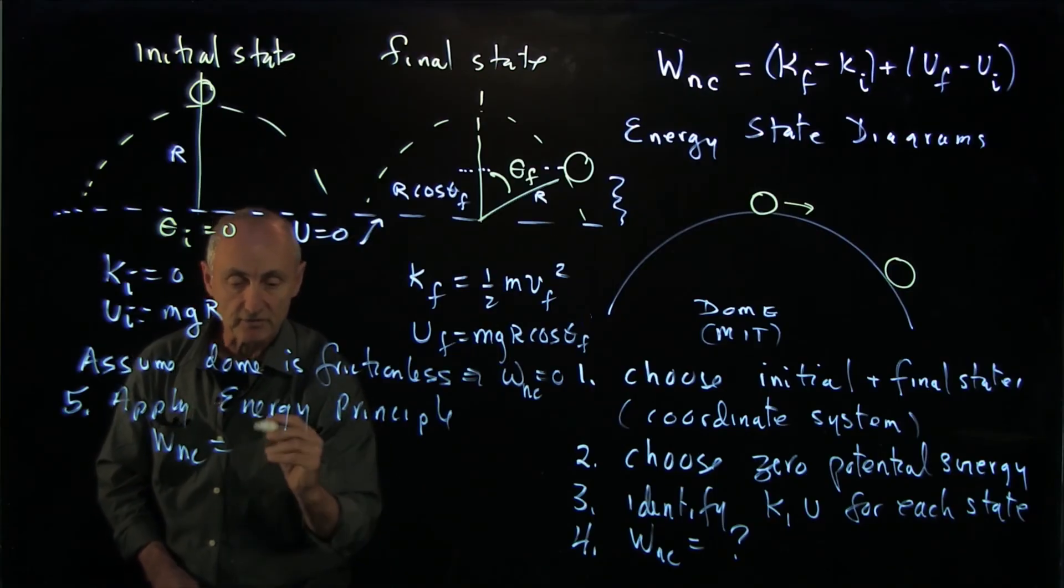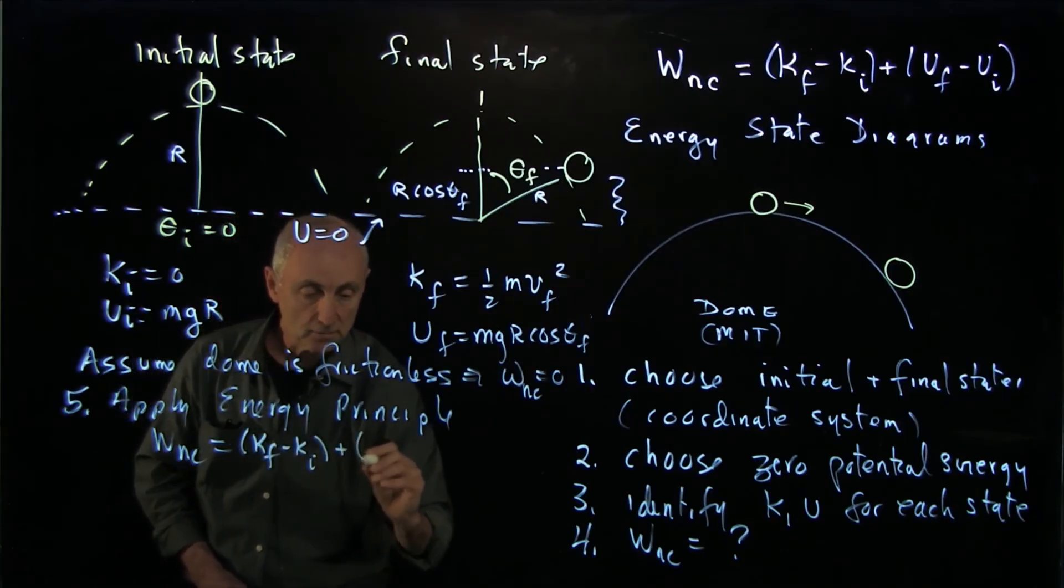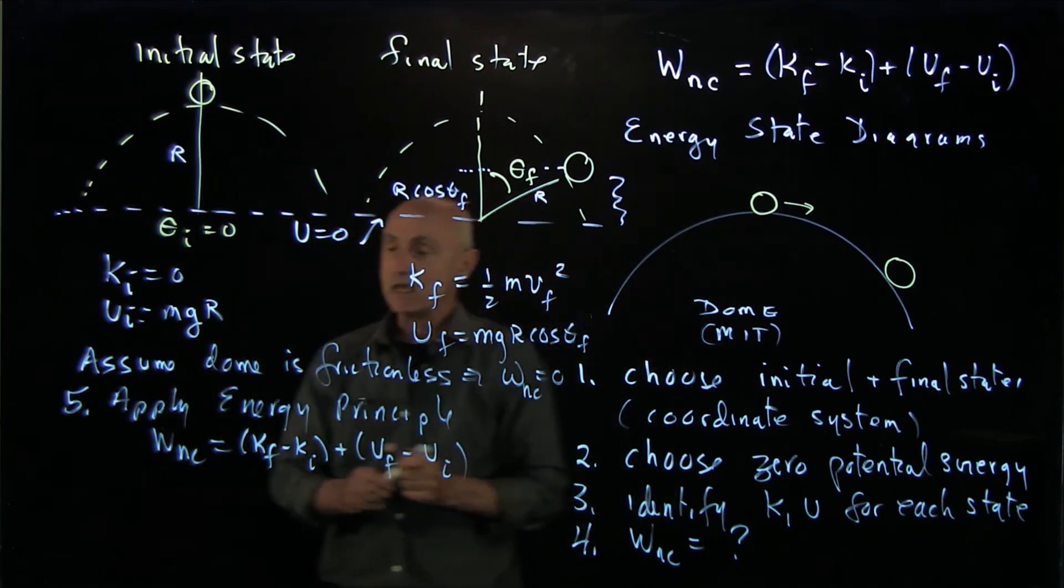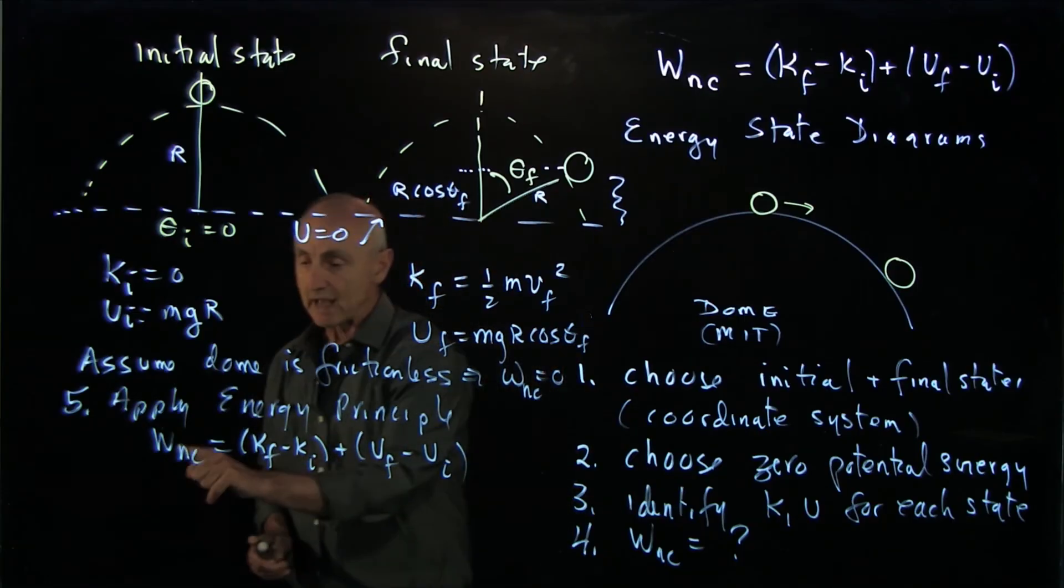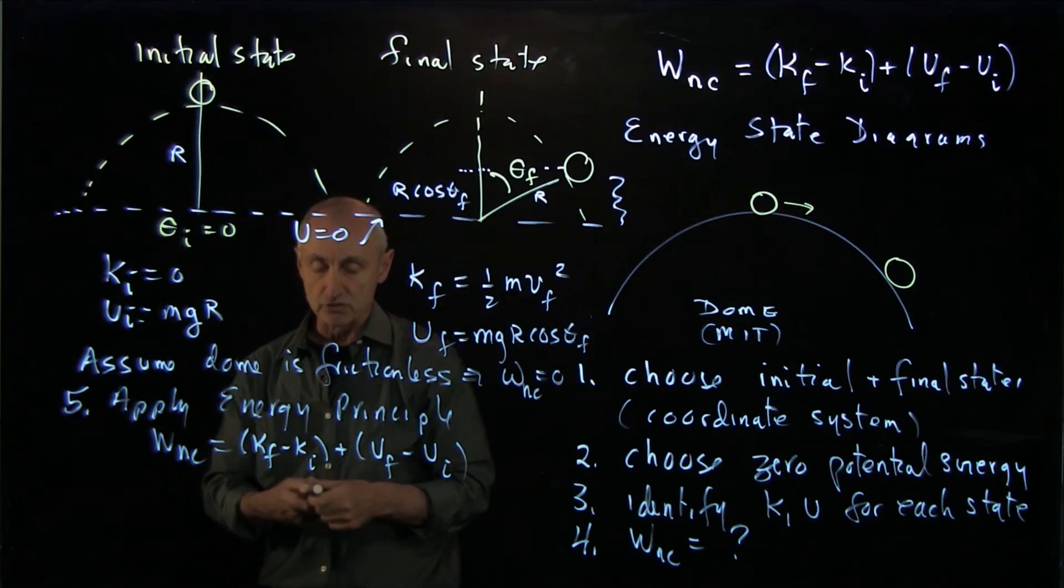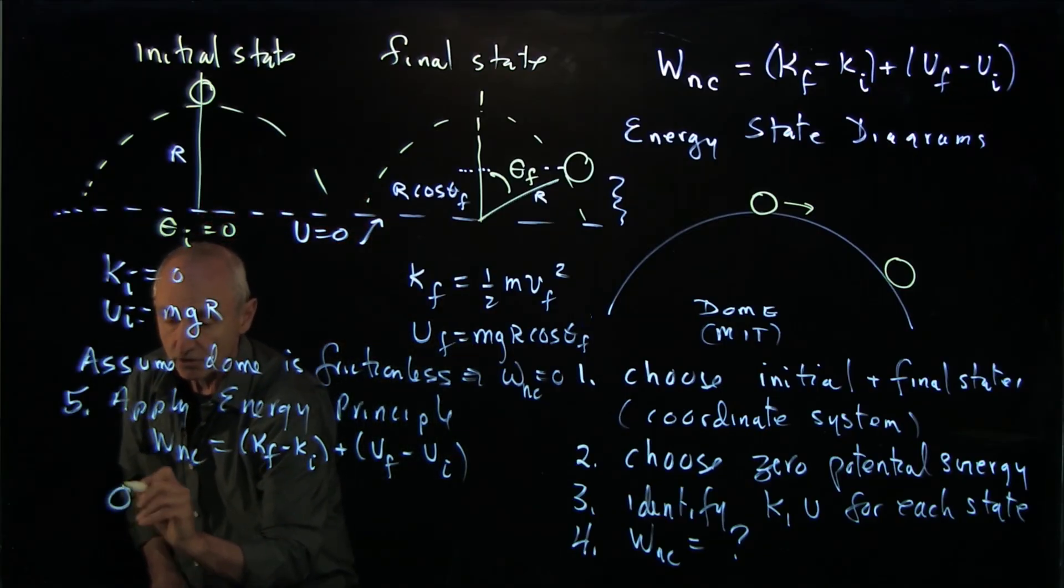Everything explicit now that we've defined K final minus K initial plus U final minus U initial. And you see, the power of these diagrams is, and this methodology is we've now defined very explicitly every single term that appears in the energy principle. And so we can write out our result.